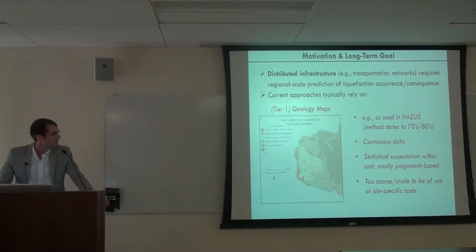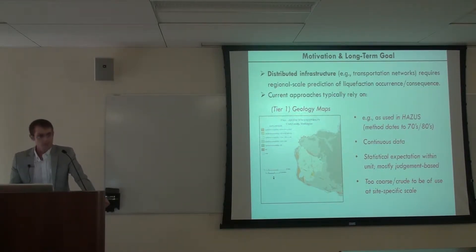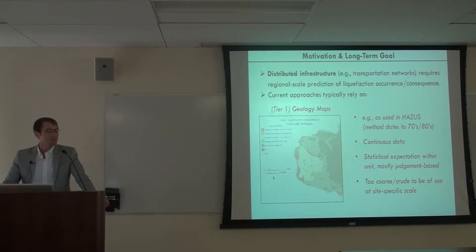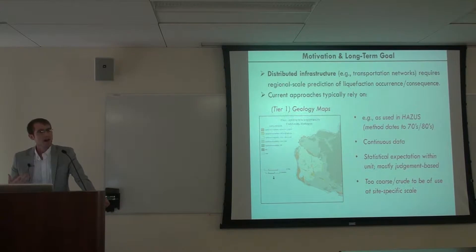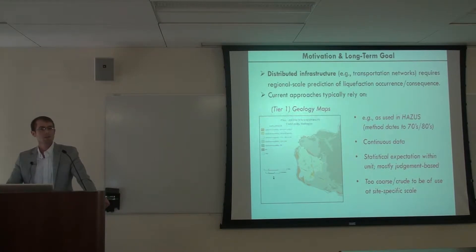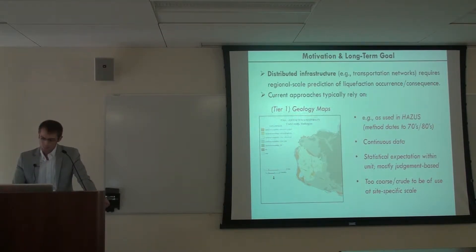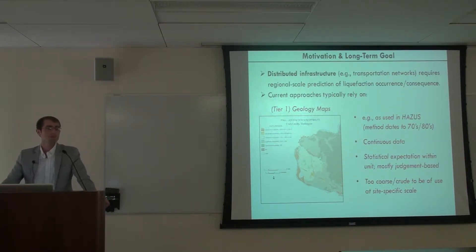The other camp is tier-one geology maps — what Hazus uses. The method in Hazus actually dates to the 1980s and hasn't changed since then. It has the benefit of being continuous data, but we're only getting a very rough statistical expectation across the geologic unit. If you follow what the model is doing, you quickly realize it's someone doing the best they could with almost no useful information — not very useful at site-specific scale. In summary, it's really challenging to predict at regional scale in a manner that's both accurate and economical.